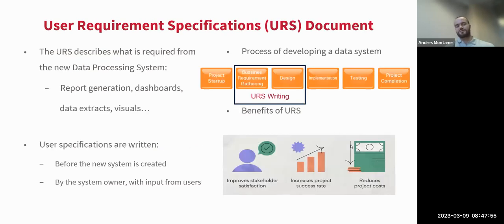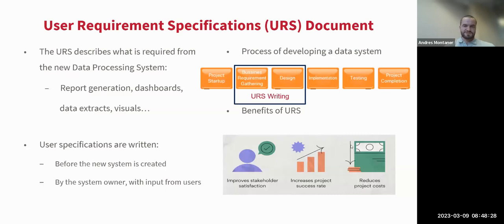Once you know what you need to do, you need to find a way to record and document it. That's where a User Requirement Specifications document — or URS — comes in. This is a business document where you record your data demand and your data use, specifying what you need to focus on and how you want to visualize it. A URS can also be used for any data processing system — report generators, dashboards, or data extractions.